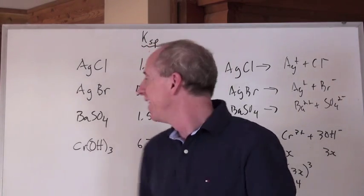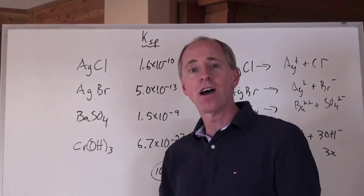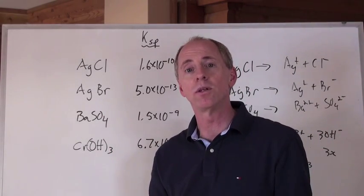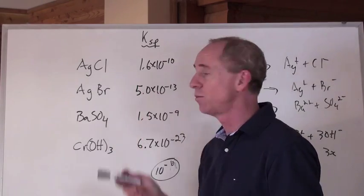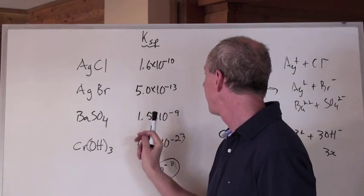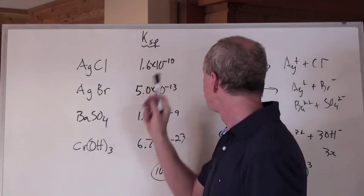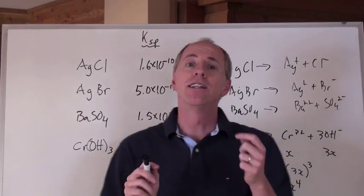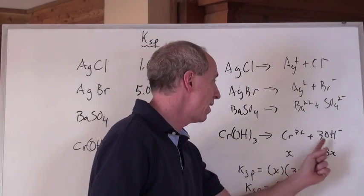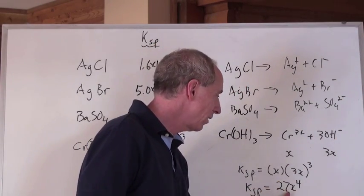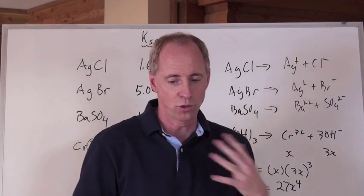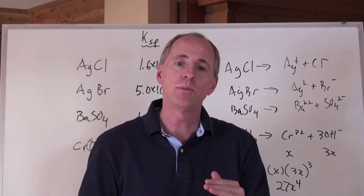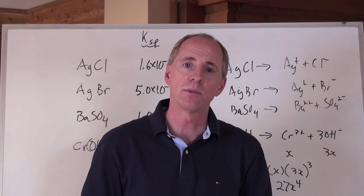Here's the key idea: if compounds dissociate into the same number of ions, compare their KSP values directly — the lowest KSP means the least soluble, the greatest KSP means the most soluble. But when compounds dissociate into different numbers of ions, you must calculate X for each and compare those values. Most of the time a rough calculation is all that's needed to determine relative solubility.